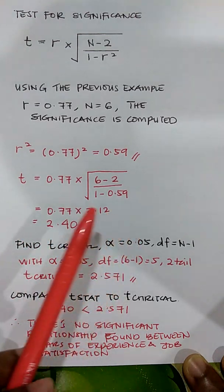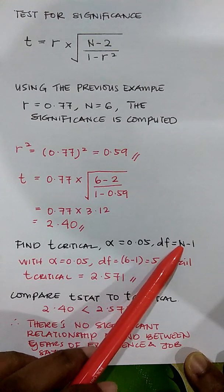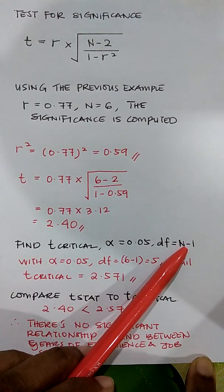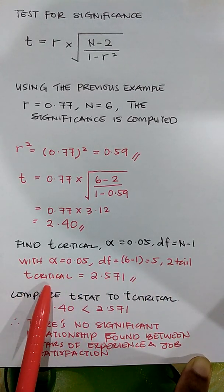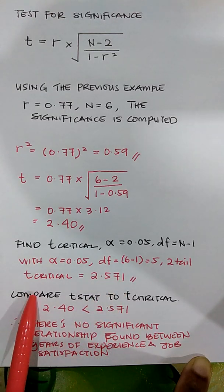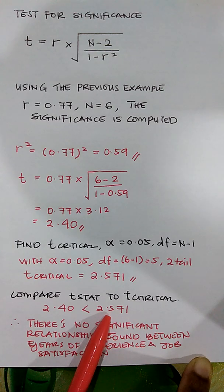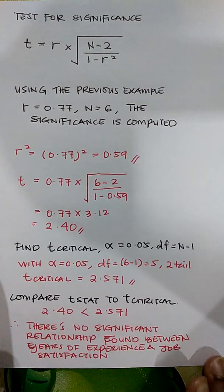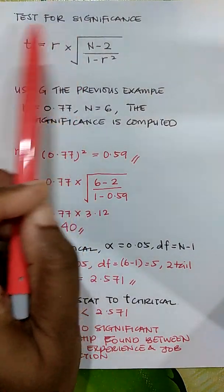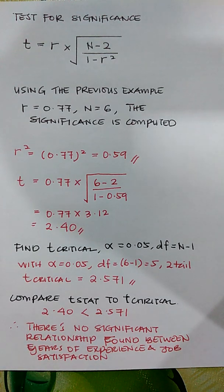To find the t-critical value, use α = 0.05, degrees of freedom = n−1 = 5 (one sample), two-tailed. The critical value from the table is 2.571. Since our t-statistic of 2.40 is smaller than the t-critical of 2.571, there is no significant relationship found between years of experience and job satisfaction.